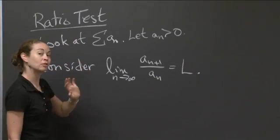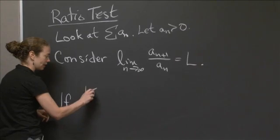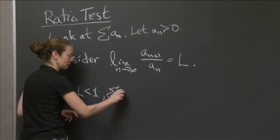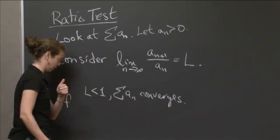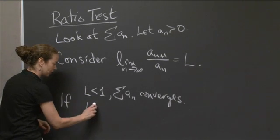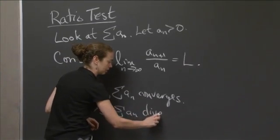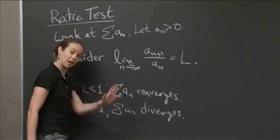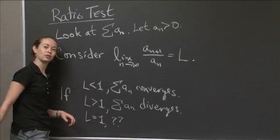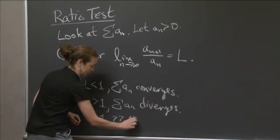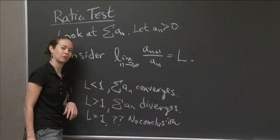Then you have the following three conclusions. If L is less than 1, then the series converges. If L is bigger than 1, the series diverges. And the last one: if L equals 1, you can't conclude anything. I'll try to convince you of that fact with a few examples later.